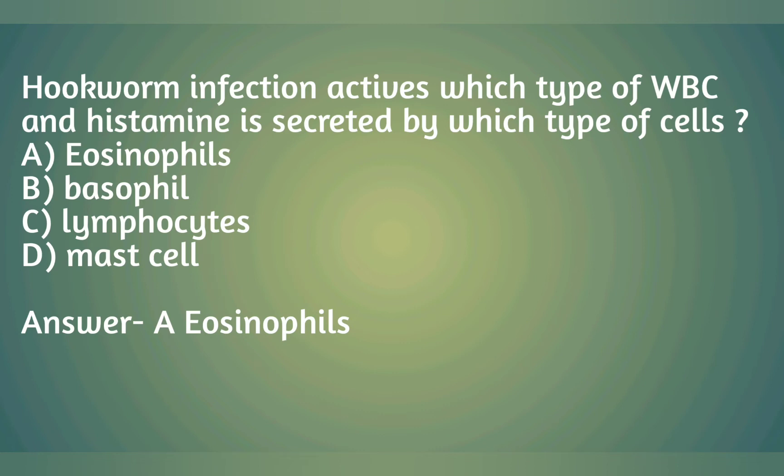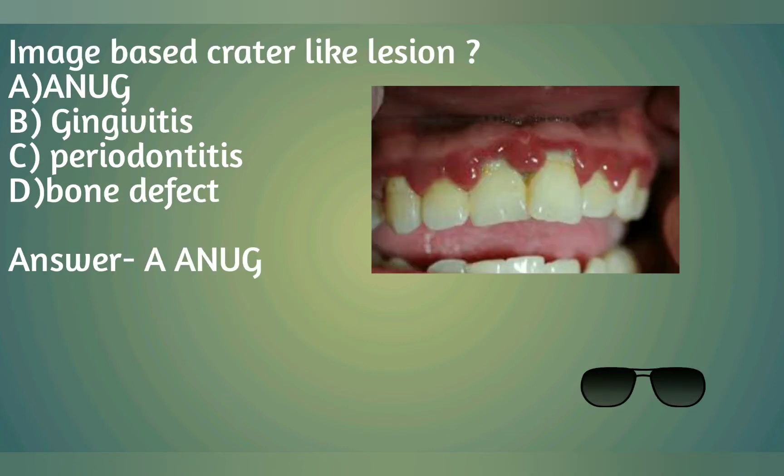Hookworm infection activates which type of WBC, and histamine is secreted by which type of cells? A) eosinophils, B) basophil, C) lymphocytes, D) mast cell. Answer: A) eosinophils.